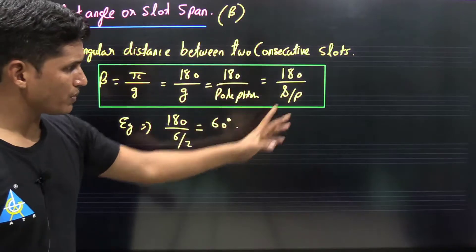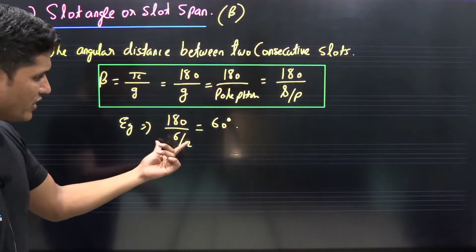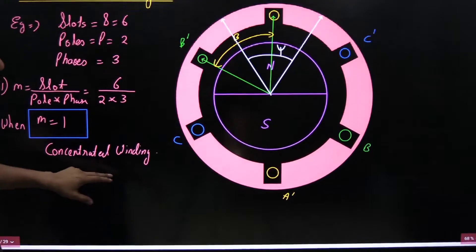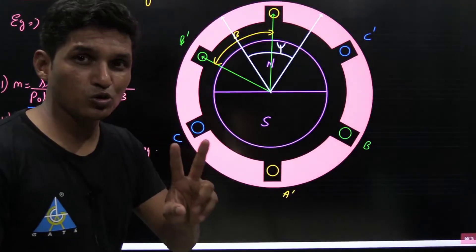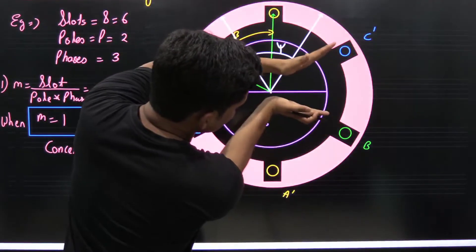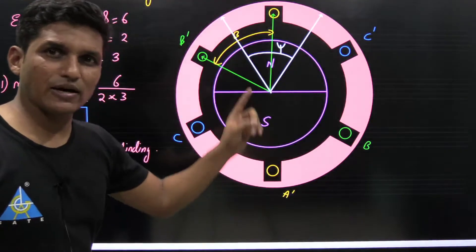In this particular example, if we put the values, then 180 upon 6 by 2 equals 60 degrees. The distance between two consecutive slots is 60 degrees. So that is the distance between two consecutive slots in this particular example.